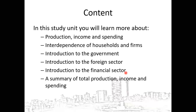All these — households and firms, government, foreign sector, and financial sector — are included in what is known as the circular flow model of income. Within that circular flow model of income, we can start with households and firms, add the government, then the foreign sector, and then the financial sector. Lastly, we shall take a look at the summary of what we would have covered.